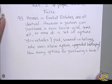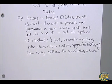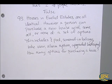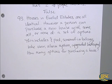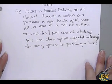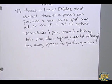Houses in Euclid Estates are all identical. However, a person can purchase a new house with some, all, or none of a set of options. These include pool, screened-in balcony, lake view, alarm system, and upgraded landscaping. How many options are there for purchasing a house?